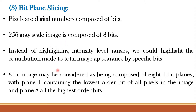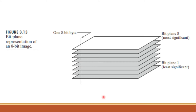Instead of highlighting intensity level ranges, we could highlight the contribution made to the total image appearance by specific bits. An 8-bit image may be considered as composed of 8 one-bit planes, with plane 1 containing the lowest order bit of all pixels and plane 8 containing the highest order bits. Bit plane 1 is composed of the least significant bits (LSBs) and bit plane 8 is composed of the most significant bits (MSBs).